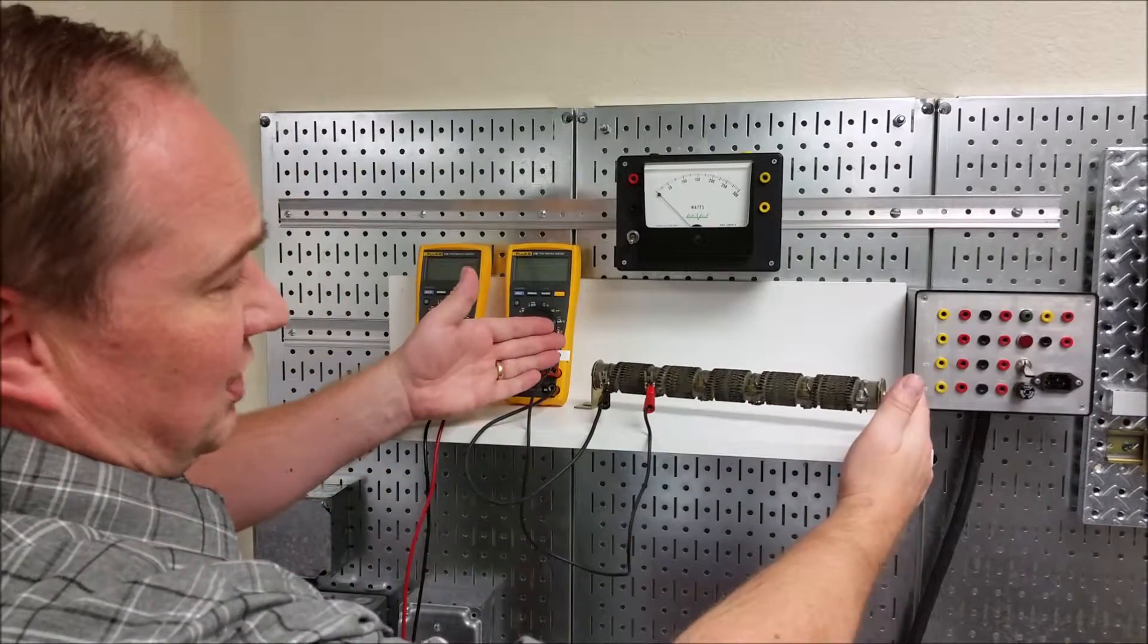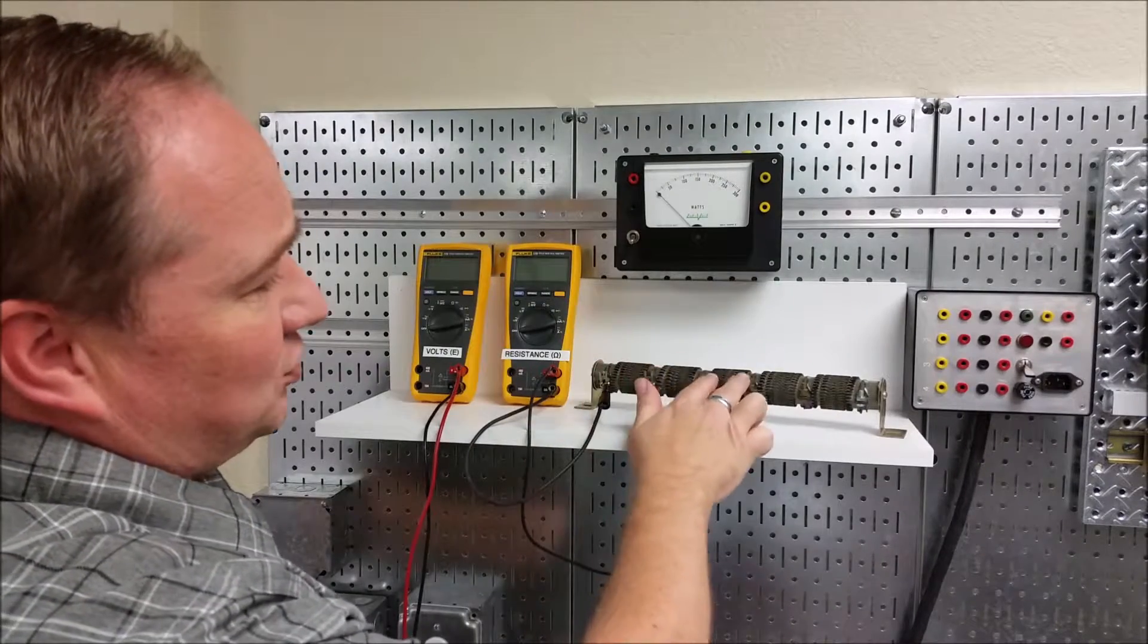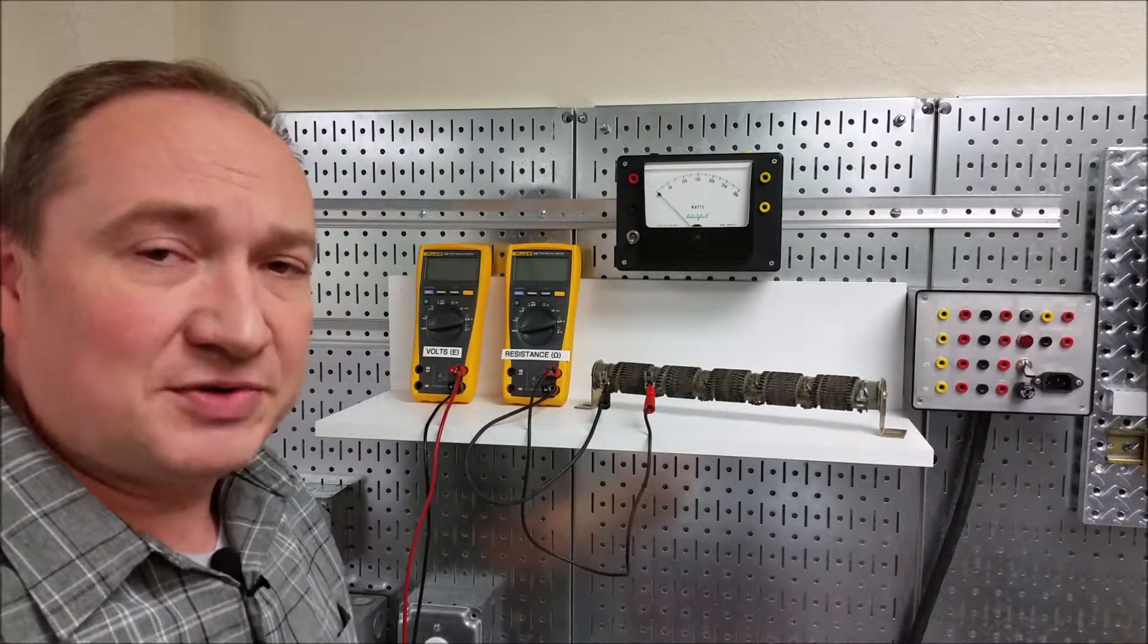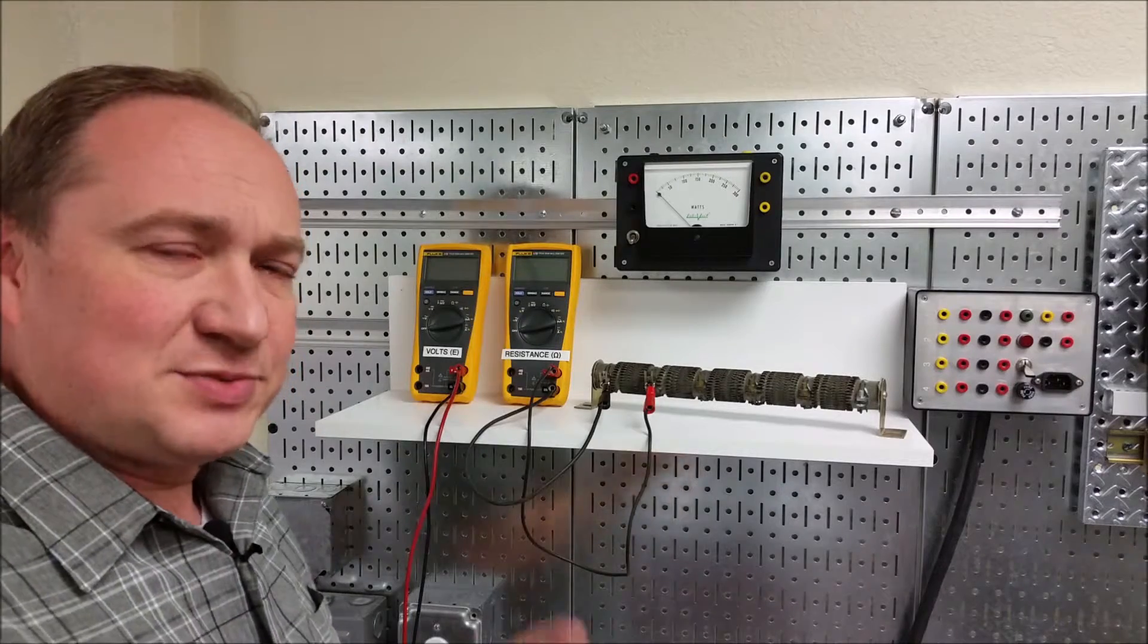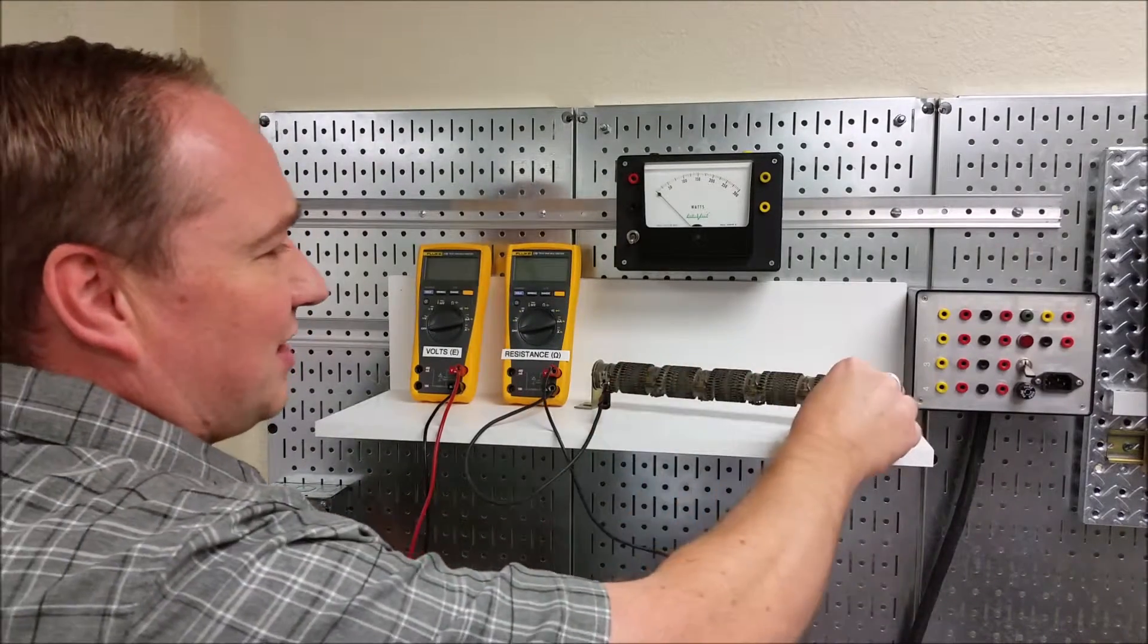This particular resistor should have 35 ohms. It's made up of five individual segments, so each of them should have about seven ohms resistance, and that's what's going to be suitable for our demonstration today. It's always good to check what you have.